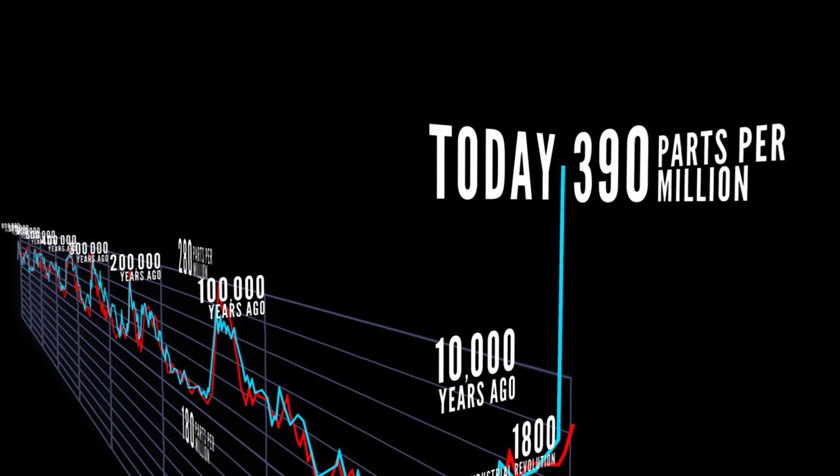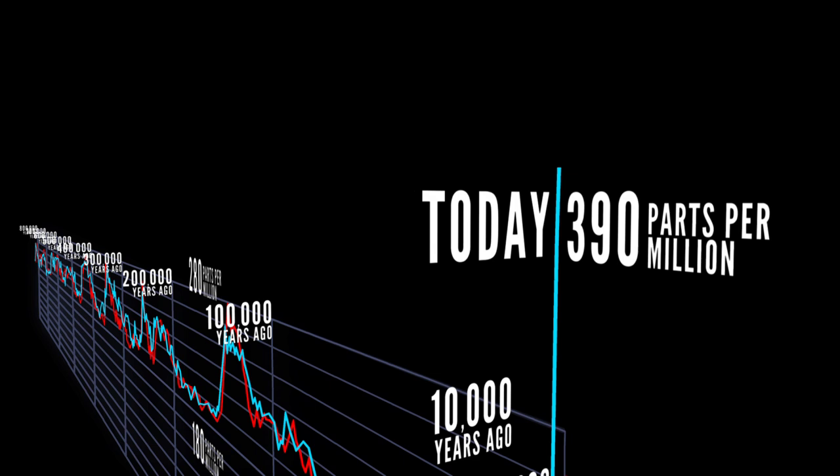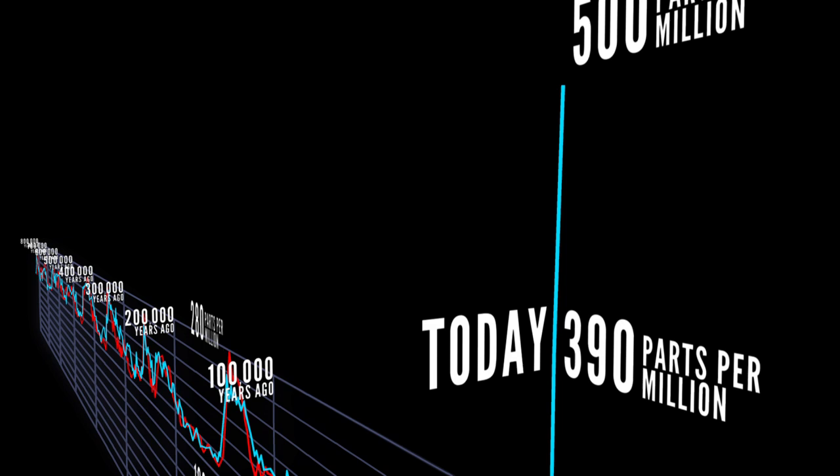But now we're headed for 500 parts per million or more. Since we made this animation, we've now broken 400 parts per million in carbon dioxide. We have very strong data that this greenhouse gas effect is what is causing the changes that the scientists are observing around the planet.